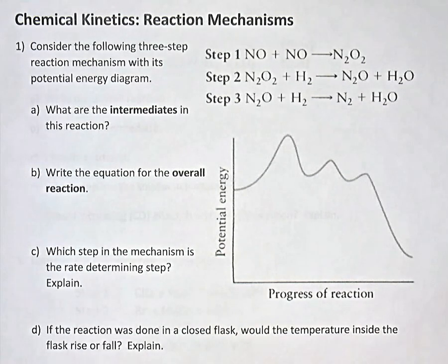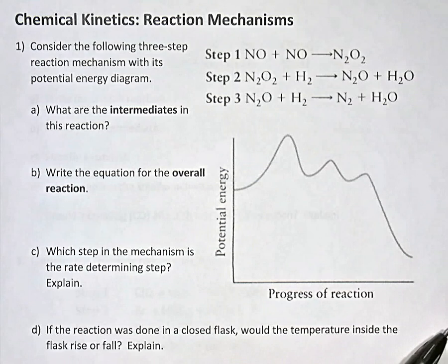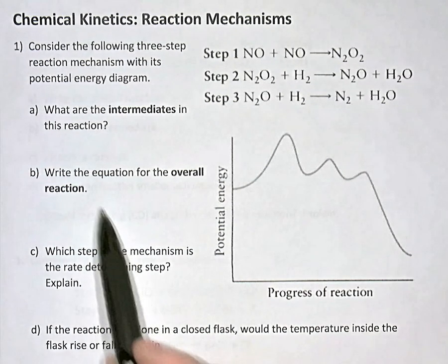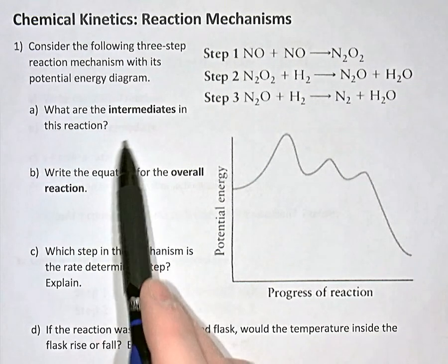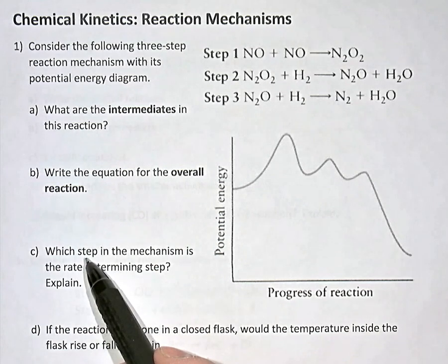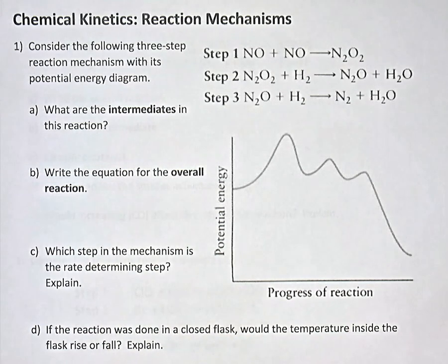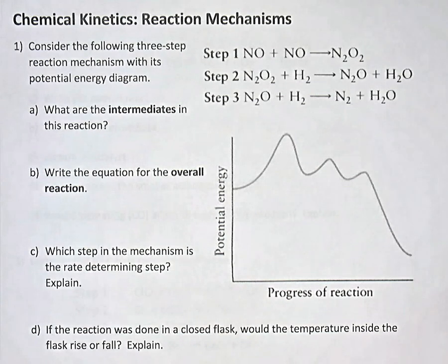If you think you know what you're doing, pause the video and try to answer the questions yourself. The first question asks: what are the intermediates in this reaction? Intermediates are products in an early step of a mechanism that become reactants again in a later step of the mechanism.